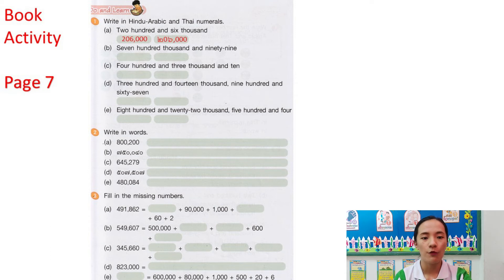Next, for number 2, write in words. For example, letter A: eight hundred thousand and two hundred. So, we write that one in words like this. Number 3, fill in the missing numbers. For example, number 1: four hundred ninety-one thousand eight hundred and sixty-two. We have two missing values here.